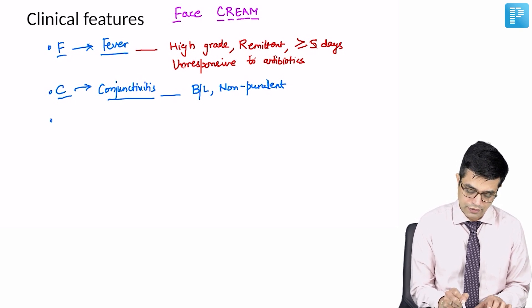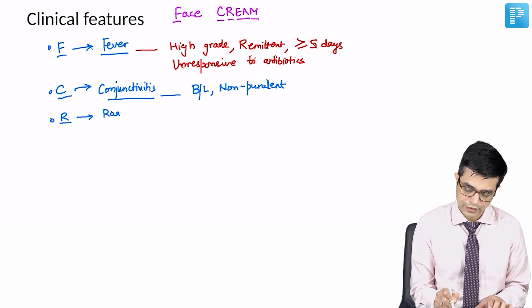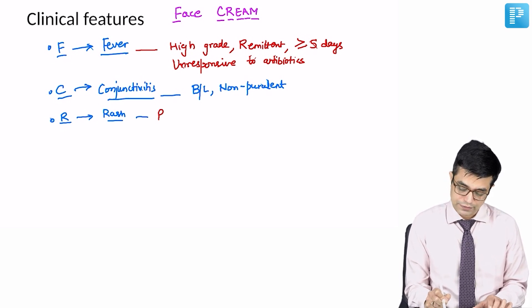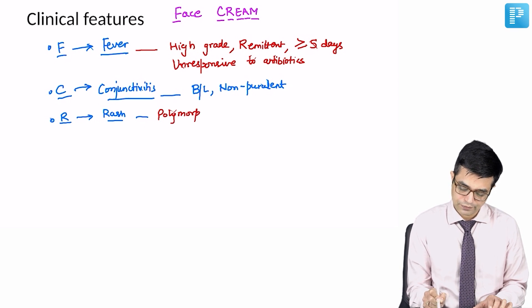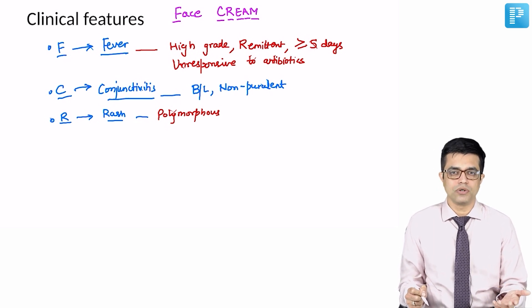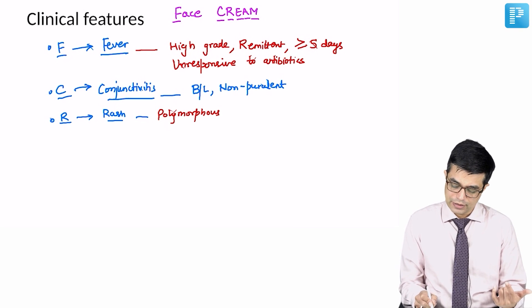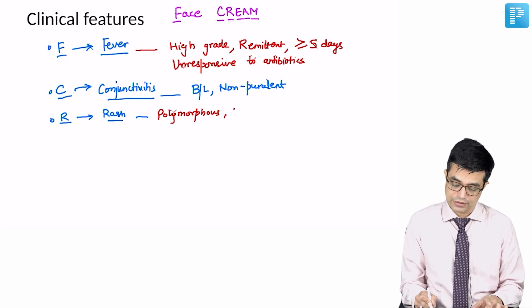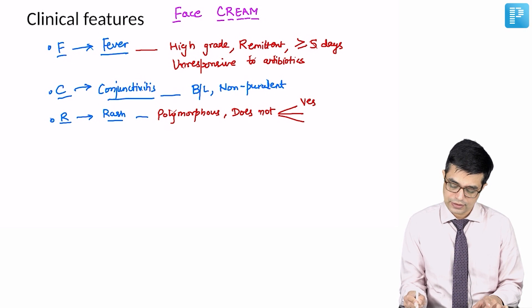Third, R stands for rash. The rash in Kawasaki disease is polymorphous, meaning multiple types of lesions are present in the same child. It can be papular, nodular, macular, any kind of lesions, but does not involve bullae or erosions. It does not have vesicles, bullae, and ulcerative lesions on the skin.